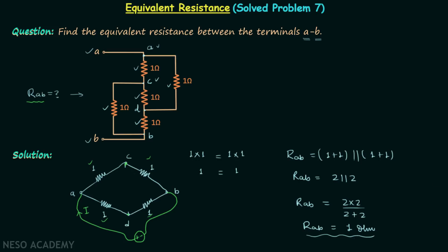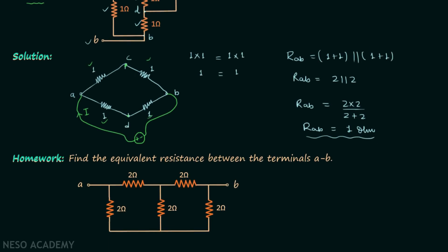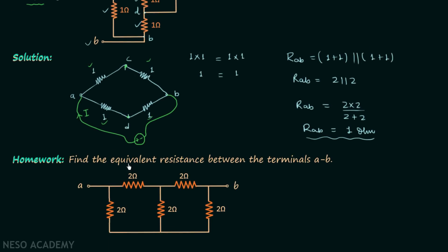Now we will move on to the homework problem. You are required to find the equivalent resistance between terminals A and B. Calculate the equivalent resistance and once you have your answer, post it in the comment section. I will end this lecture here — see you in the next one.